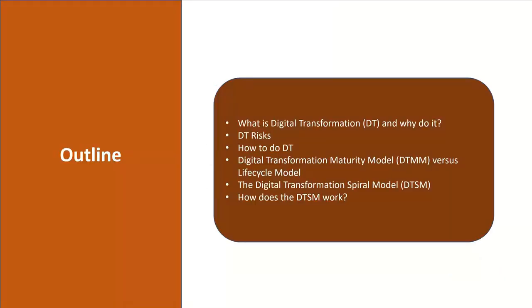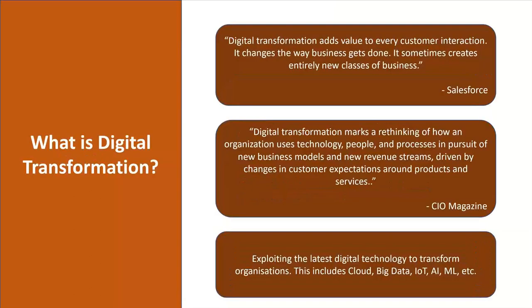The talk will cover: what is digital transformation and why should we do it? What are the risks, and how do you do digital transformation? Then I'll compare the digital transformation maturity models and the digital transformation life cycle models, and then focus in on this framework that I'm suggesting, which is the digital transformation spiral model. Then I'll take you through the steps that this model suggests, and then throw it open to questions.